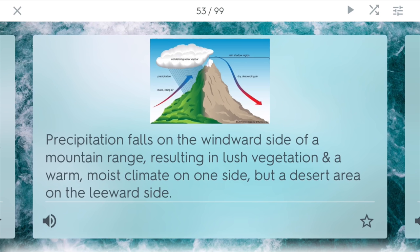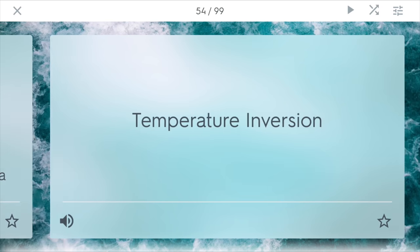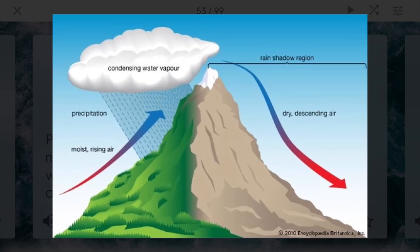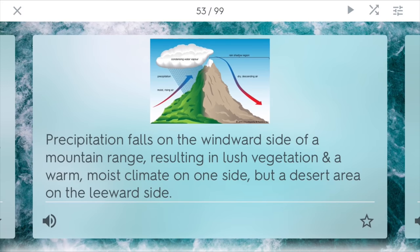Rain shadow effect. This is an effect that shows that when precipitation falls on the windward side of a mountain range — where the clouds and the wind are — you have lots of lush vegetation and a warm, moist climate. But these clouds can't move over the mountain to the other side, so right on the other side you'll have a desert area on the leeward side because it's not getting all this rain and moisture. You see this in places like the Andes Mountains in South America, where it starts to block the currents and air from the Pacific Ocean and creates these deserts on the other side.